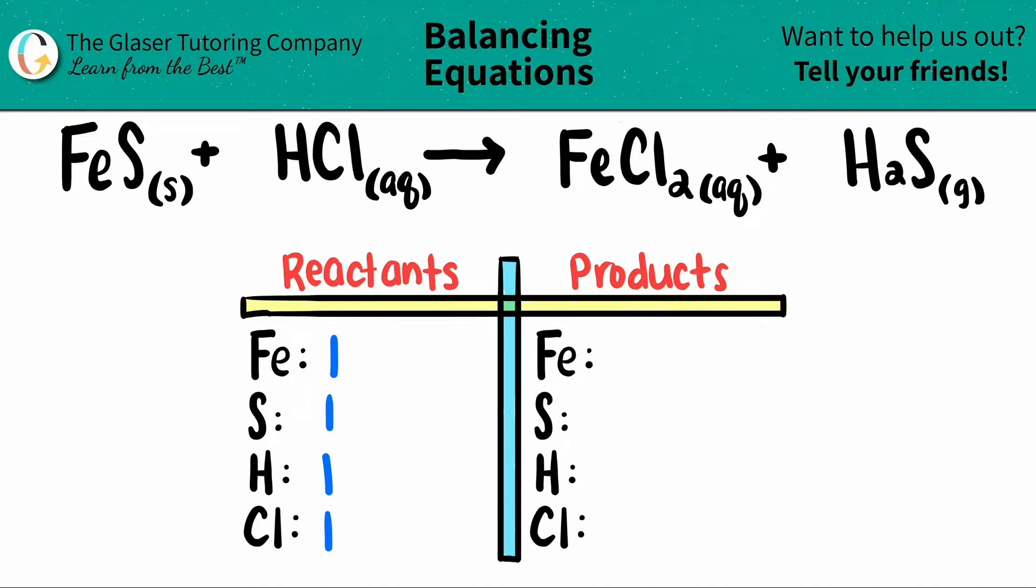So one's all around for the reactants, and then for the products, I have one iron. There was no subscript, right?